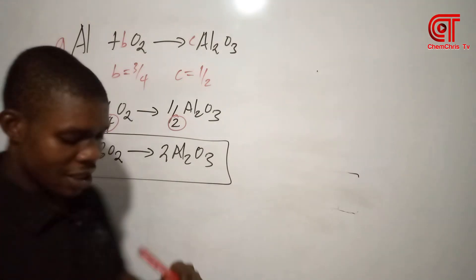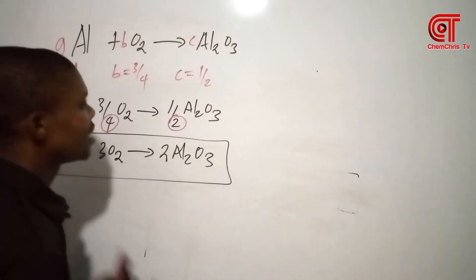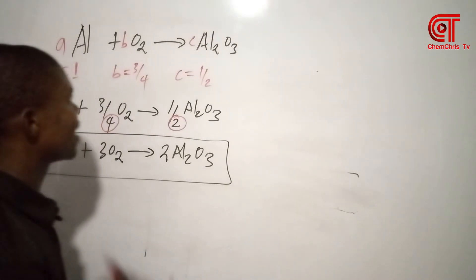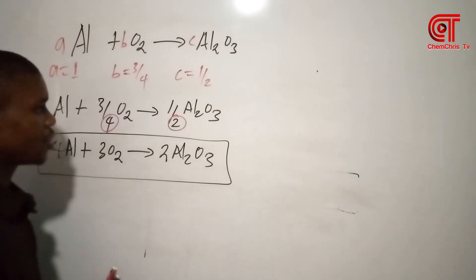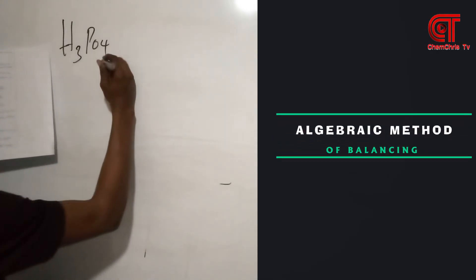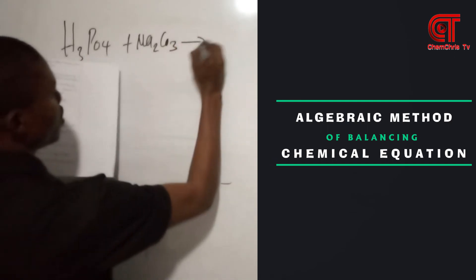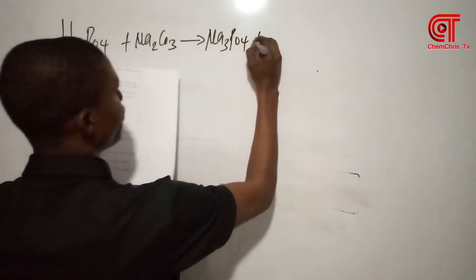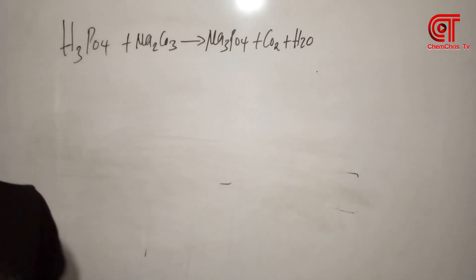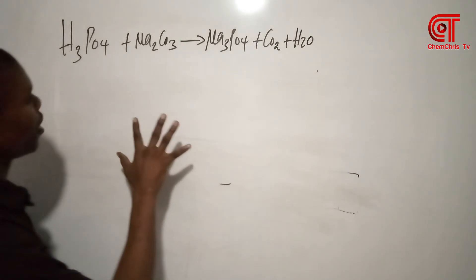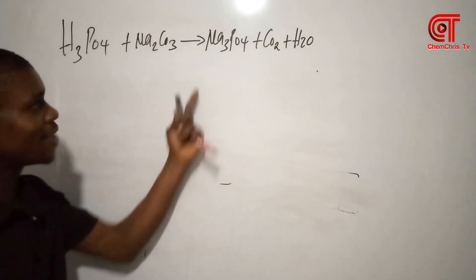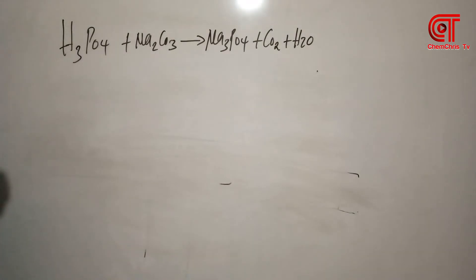These were simple equations. Now let's move into some more complex ones that have more than 2 elements, which can give us a little more challenge. Let's balance those before we end this video. This one is a little bit complex, but if you follow the method we have used, you should be able to balance it — step by step.